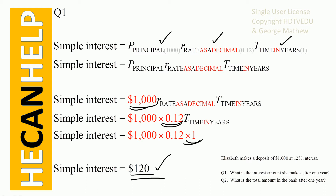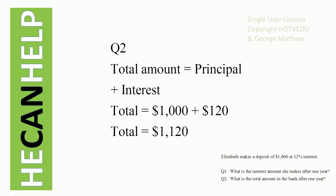This $120 is the interest she gets. She already had $1,000 to begin with, so the total amount she now has after one year is 1,000 plus 120, which is $1,120. So the interest is $120, and the total amount she has in the bank is $1,120.